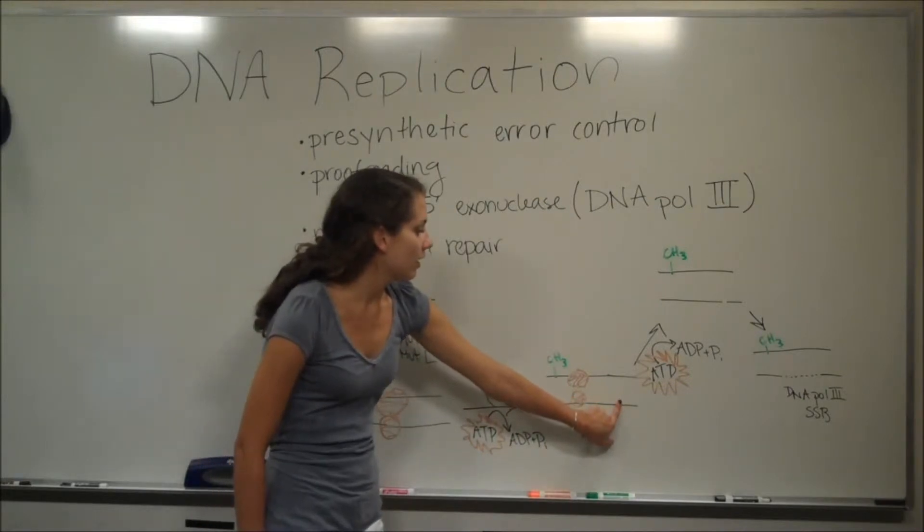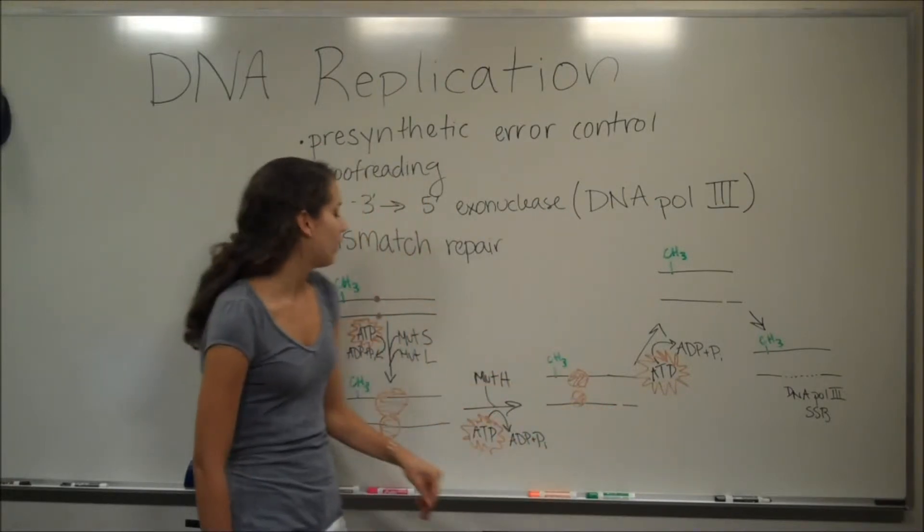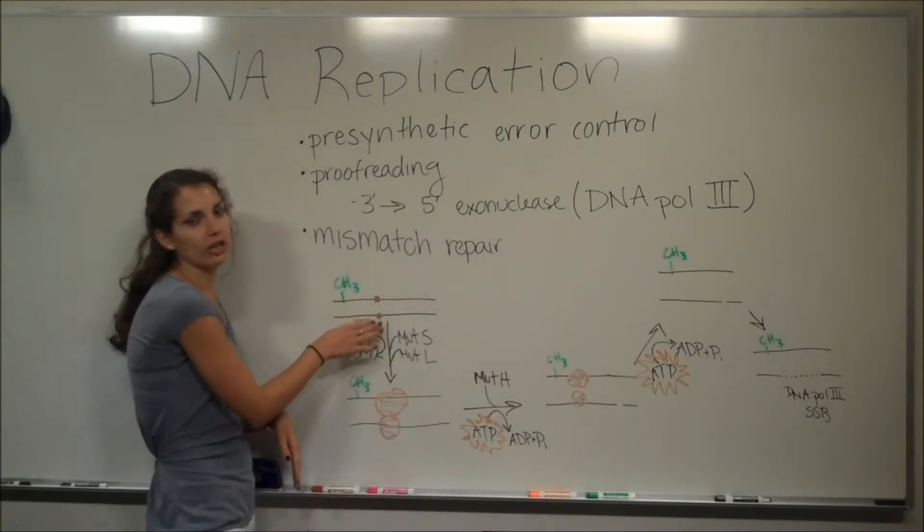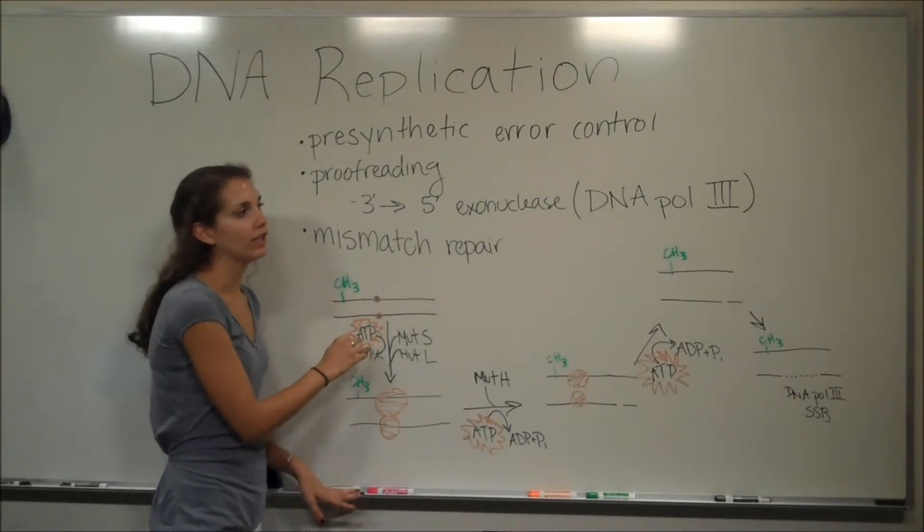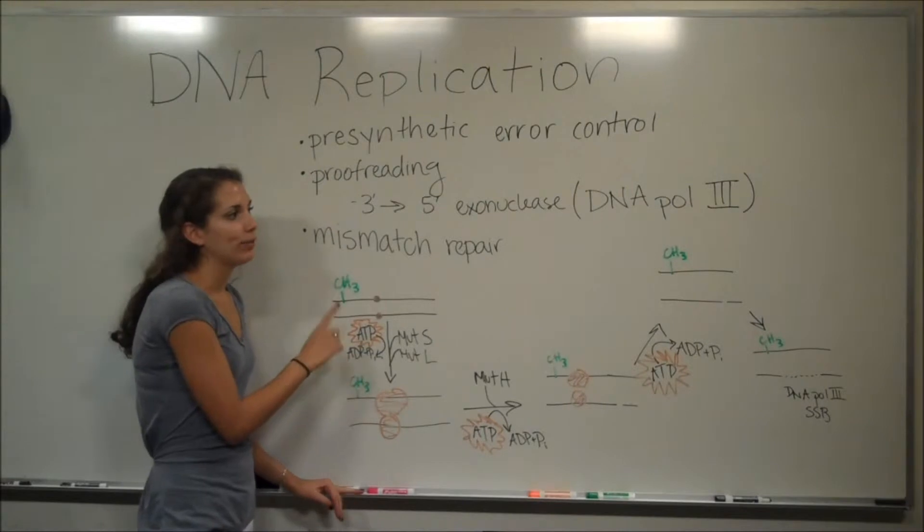It actually nicks it not at the place where there's a mistake. Oh, I forgot to say the mistake is in this drawing. It's a little pink mark. It's where there's two DNA bases that aren't complementary to each other that got past the presynthetic error control and the proofreading control.